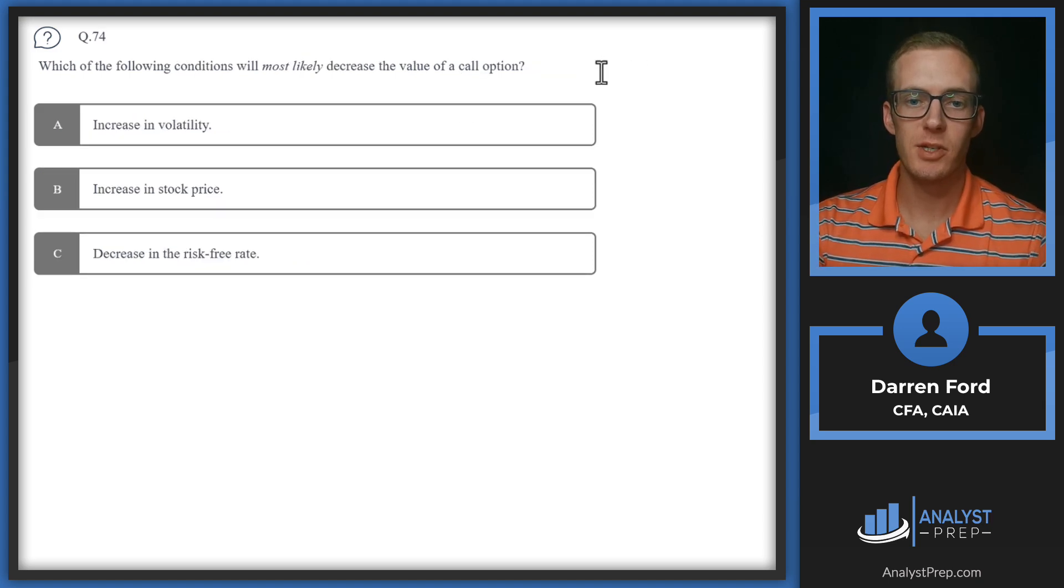Question 74: Which of the following conditions will most likely decrease the value of a call option? A: Increase in volatility. An increase in volatility is actually going to increase the value of a call option. As volatility increases, it makes it more likely that the call option would get close to or go into the money, because the price is gyrating more. It's going to be more likely to shoot up and increase that value.